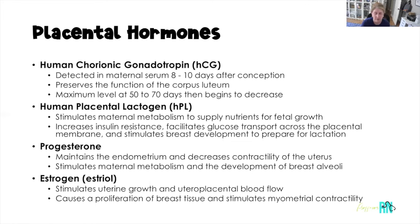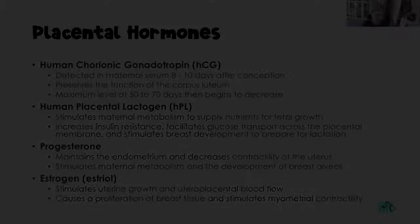Progesterone also plays a role in stimulating maternal metabolism and in the development of the alveoli in the breast, which are necessary for milk production. Estrogen stimulates uterine growth — remember that uterus grows from about the size of your fist when not pregnant to many times bigger by full term. Estrogen also stimulates uteroplacental blood flow, ensuring adequate blood flows through the placenta for nutrient and gas exchange. Estrogen causes breast tissue to grow, and it also stimulates myometrial contractility.